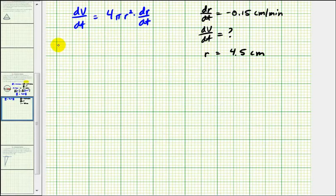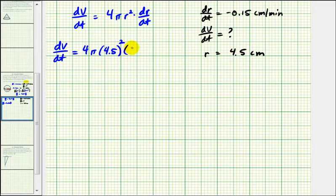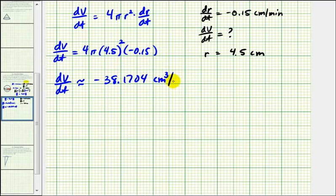So we'd have dV/dt equals 4 times pi times r squared, which is 4.5 squared, since the diameter was 9, times dr/dt, which is negative 0.15 centimeters per minute. We have dV/dt is approximately equal to negative 38.1704, and the units would be centimeters cubed per minute.